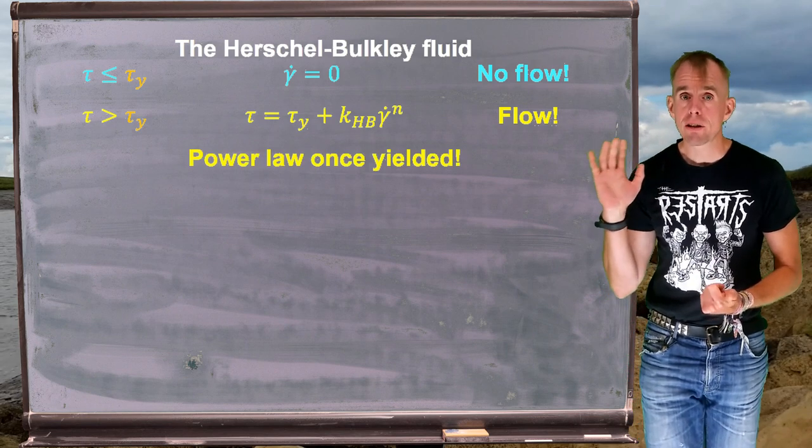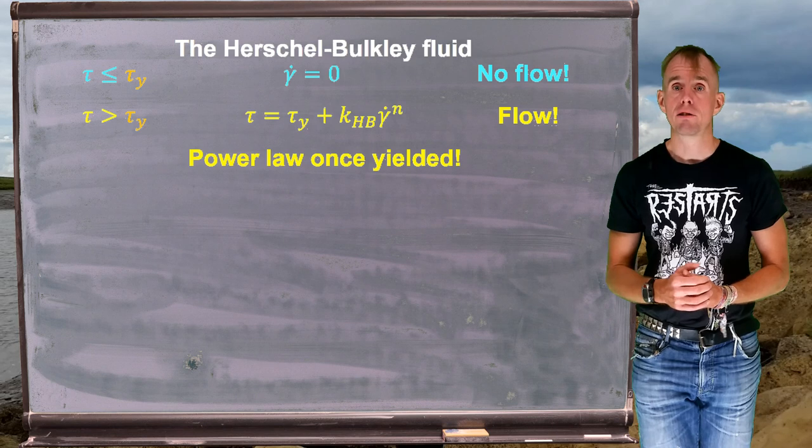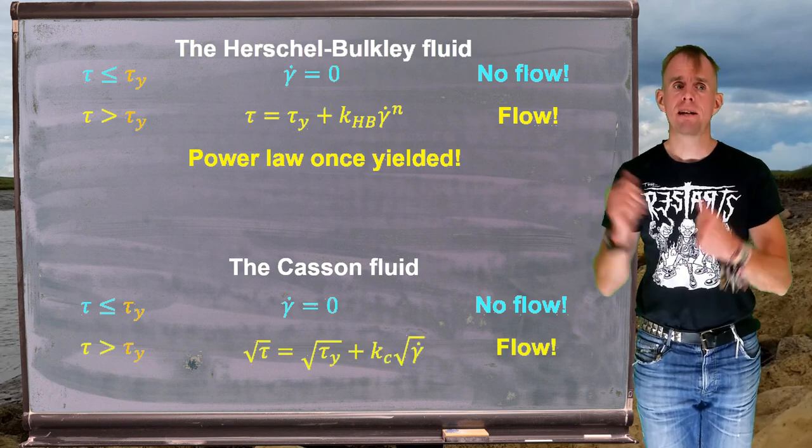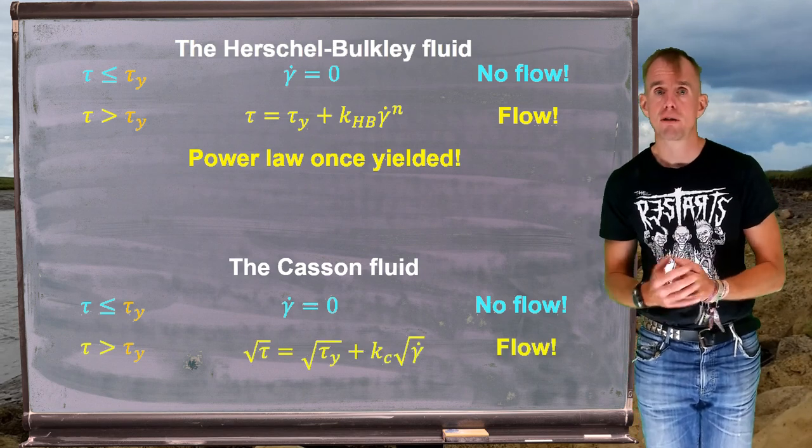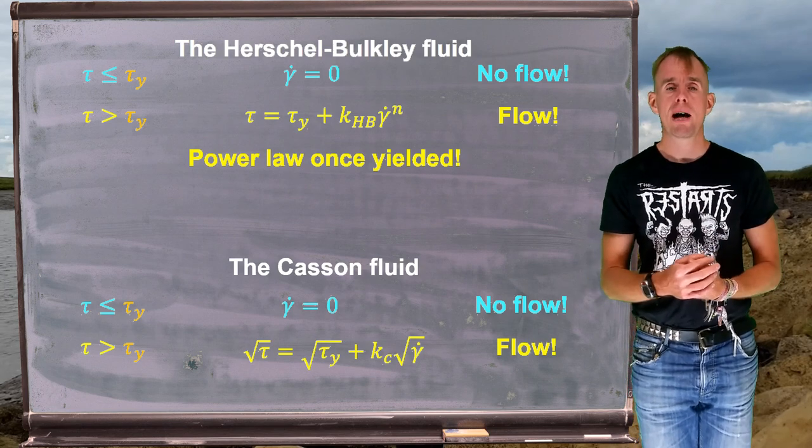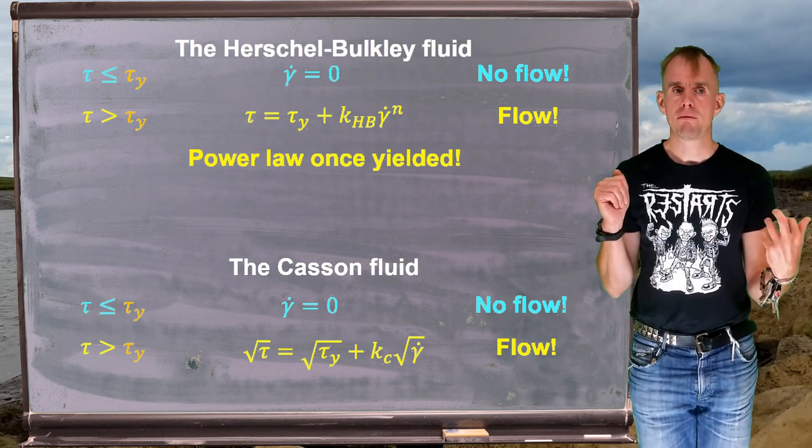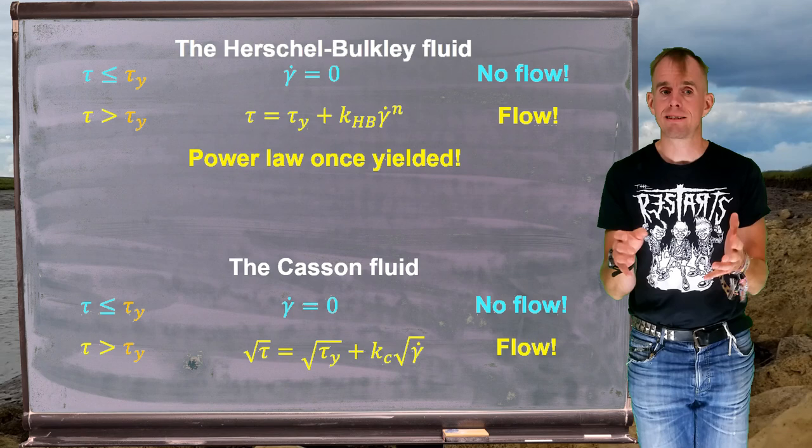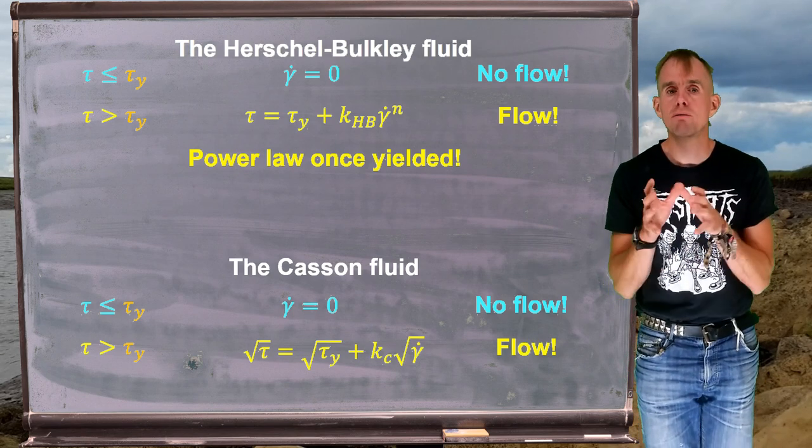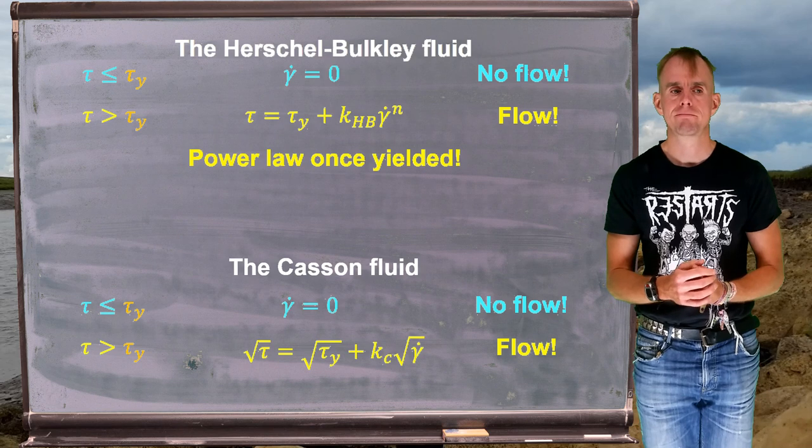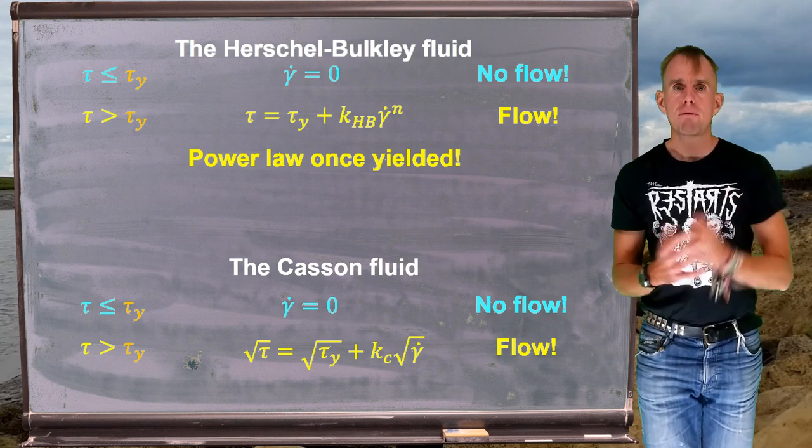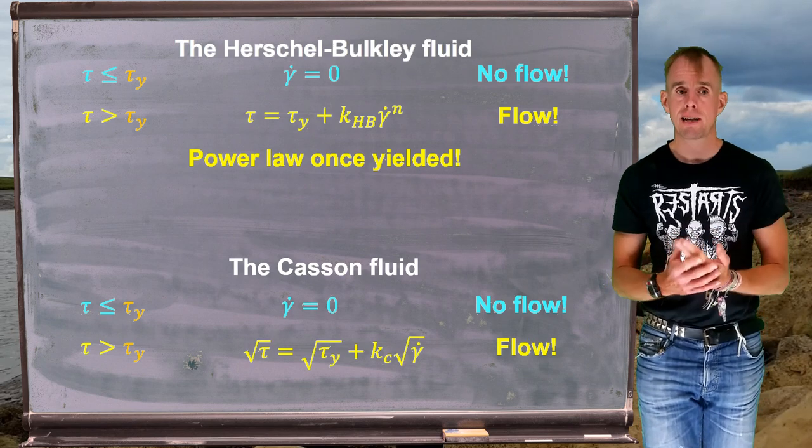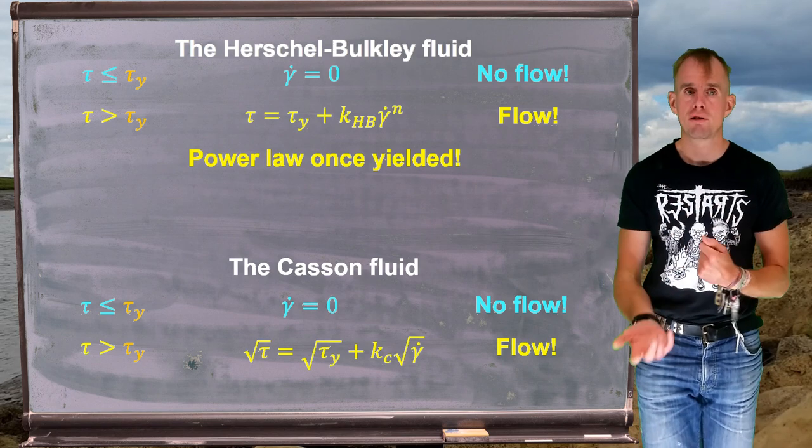Now, there is another commonly used effectively non-linear viscoplastic constitutive law, the Casson fluid, which says that, once again, below the shear yield stress there is no flow. And above the shear yield stress we have a formula where we have the root of tau is equal to the root of tau y plus a parameter that looks like a consistency index kc, the Casson consistency index, times root gamma dot, so gamma dot to the power half. So we have three basic viscoplastic constitutive laws. We have the Bingham fluid, the Herschel-Bulkley fluid, and the Casson fluid, and there are various parameters that are associated with each one.